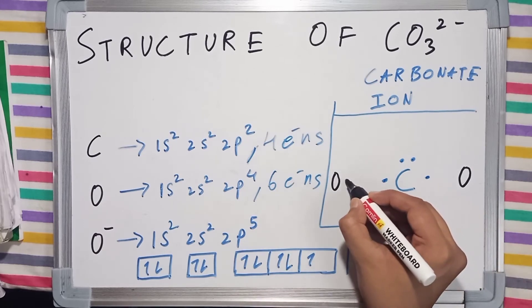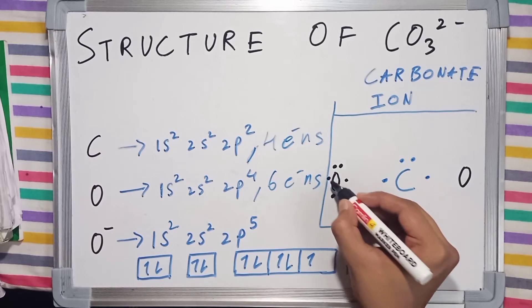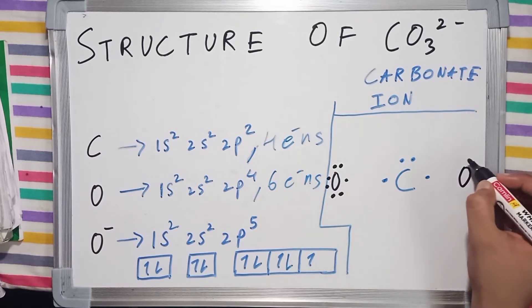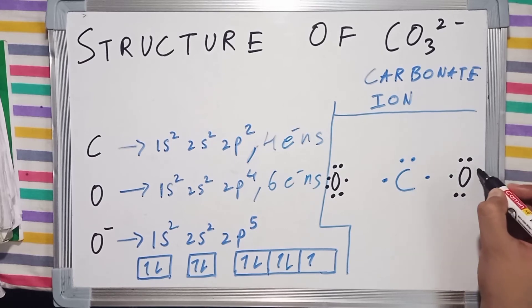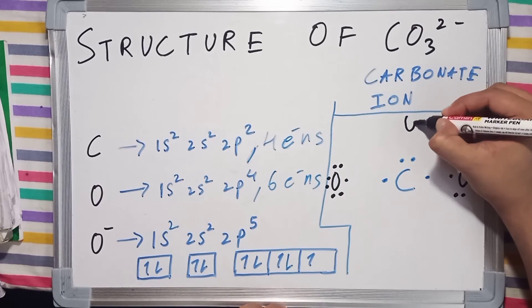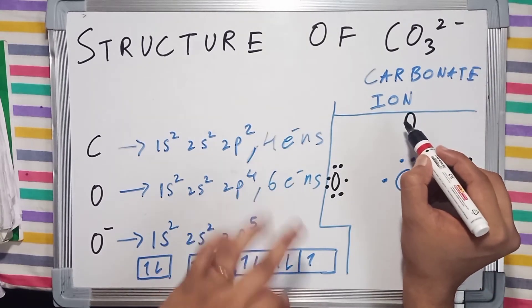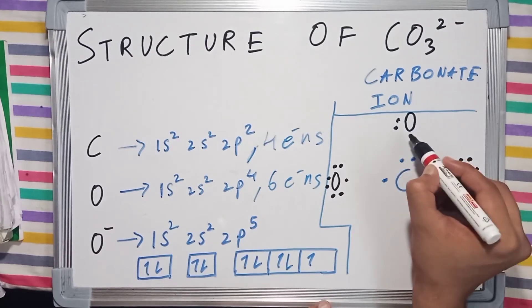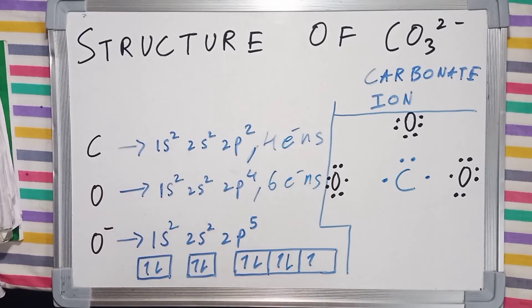That's 1, 2, 3, 4, 5, 6, and 7 electrons. And an oxygen here which will have 6 valence electrons: 1, 2, 3, 4, 5, and 6.